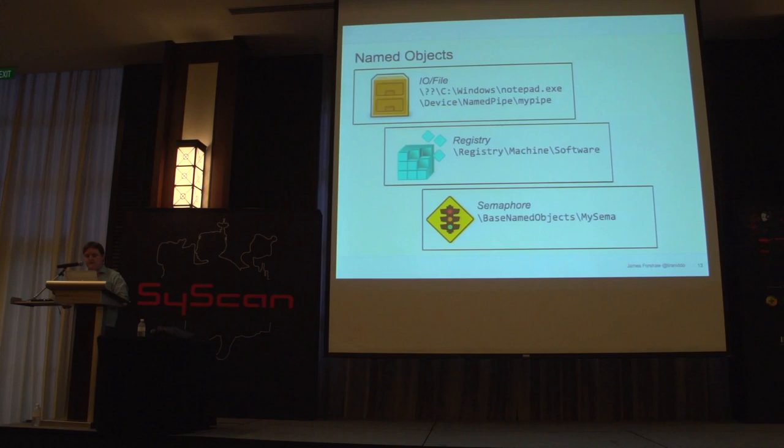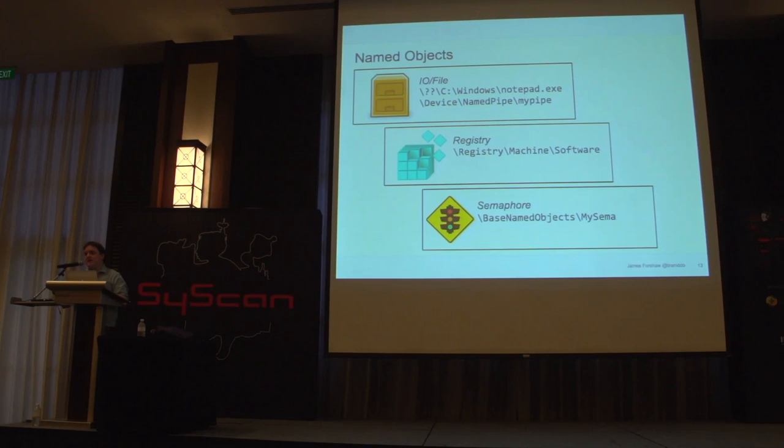The object manager handles more than just files. It also handles the registry — accessed using a path like \registry\whatever. And even named resources: the majority of resources in Windows, such as synchronization objects, can be named with a unique identifier, and these are added as entries into an object directory in the object manager. For example, you can reference a semaphore by name.